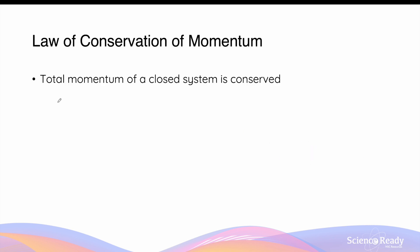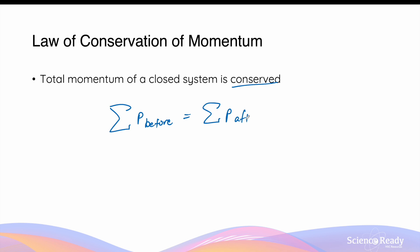The law of conservation of momentum states that the total momentum of a closed system is always conserved, which means it stays constant. Mathematically, this is given by sigma, which means the sum of the momentum before a particular event equals the total momentum of the system after a particular event. We'll go through some examples of how to apply the law of conservation of momentum in a moment.